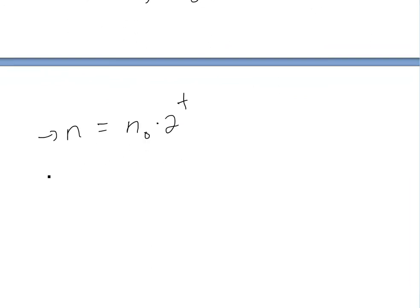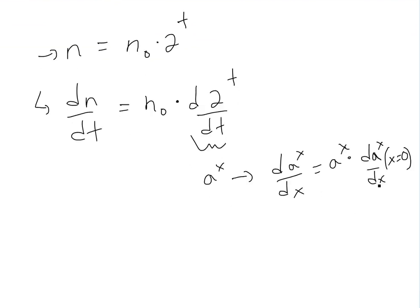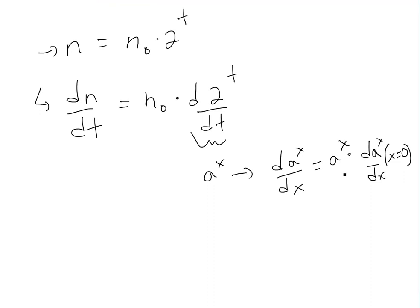To find the population growth rate, we take the derivative. So dn/dt. We have to find the derivative of this. This equals the constant taken out times the derivative of 2^t. Remember, this is an exponential function in the form of A^x. I showed it in my earlier video, so make sure you watch that. The derivative is d(A^x)/dx equals A^x times the derivative of A^x at x = 0. But if you have the derivative of e^x, this equals e^x. That's why e is special.